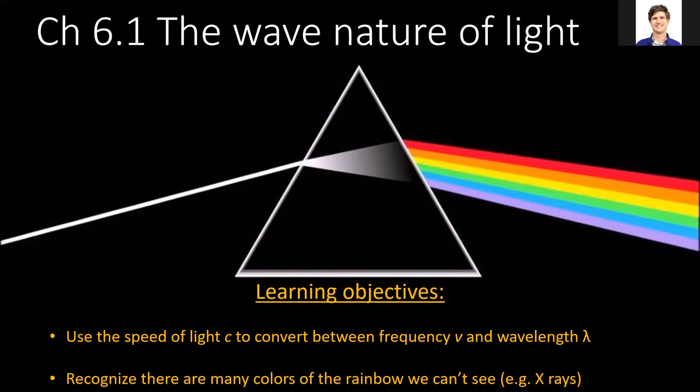But before we focus on atoms, we need to see the light as a wave. And this section will define four specific properties of light: speed, wavelength, frequency, and amplitude.